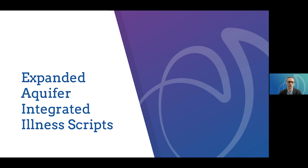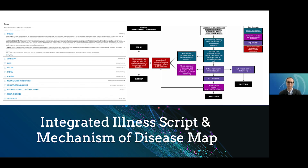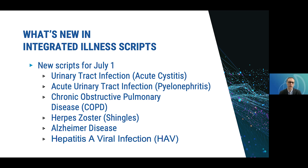Finally, let's talk about Aquifer Integrated Illness Scripts. Aquifer published our first integrated illness scripts in 2021, and we've continued to add to the available scripts. Each script covers one specific condition and includes a brief discussion of epidemiology, the key clinical features associated with the condition, and the core scientific concepts associated with that clinical feature, plus pages that allow students to think about the implications for further workup and management. Each integrated illness script also includes a mechanism of disease map, which illustrates the relationship between the key features of a condition and the associated basic science concepts. There are 33 integrated illness scripts currently available, with eight more on the way this year. You can find a full list on Aquifer's website.